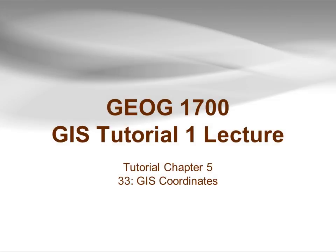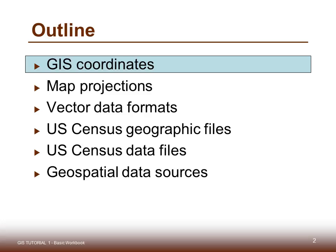This lecture file is the first of several related to Chapter 5 in the tutorial manual, which deals with GIS data. The first section addresses GIS coordinates. Following the section on GIS coordinates, we'll talk about map projections, vector data formats, U.S. Census geographic files as opposed to U.S. Census data files, and geospatial data sources outside of the U.S. Census.